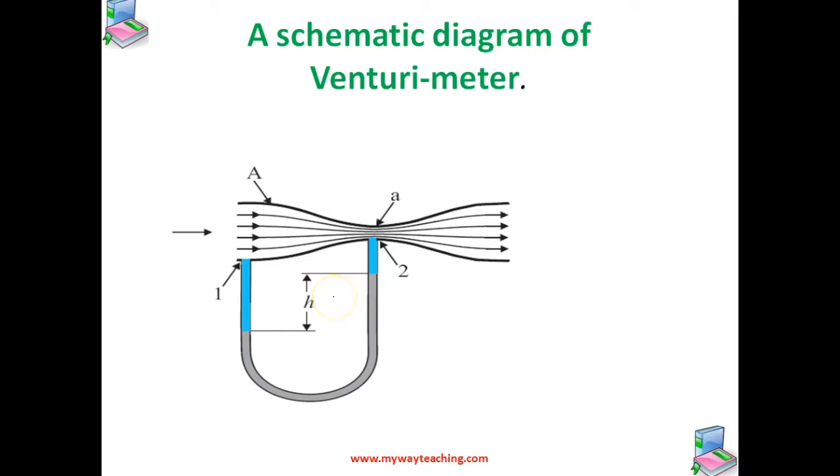The manometer contains a liquid of density rho m. The speed v1 of the liquid flowing through the tube at broad neck area A is to be measured. From the equation of continuity, the speed at the constriction v2 equals A by a into v1. Using Bernoulli's principle, we can write p1 plus 1/2 rho v1 squared equals p2 plus 1/2 rho v2 squared.